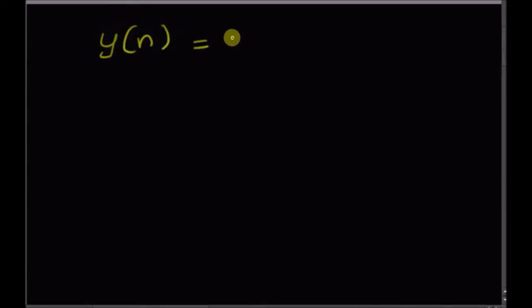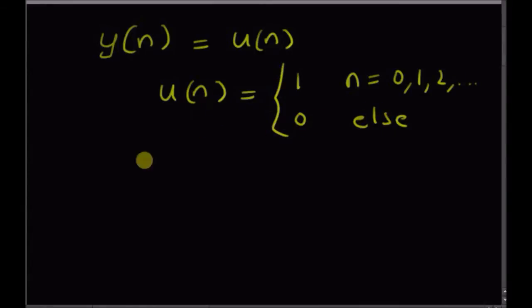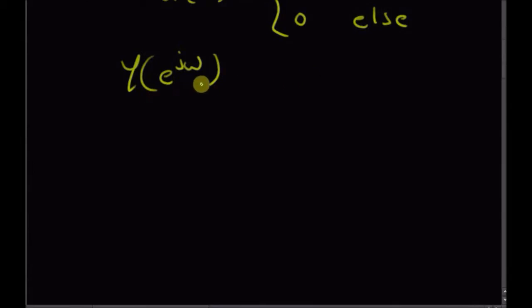Hello, welcome. In this short video let us look at the DTFT of the unit step sequence. The signal y(n) = u(n), where u(n) = 1 for n = 0, 1, 2, and so on, and 0 elsewhere. Given this unit step sequence, we want to find the DTFT, that is Y(e^jω) of u(n).